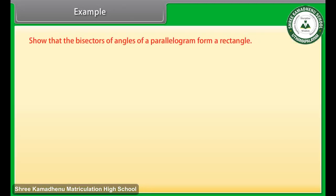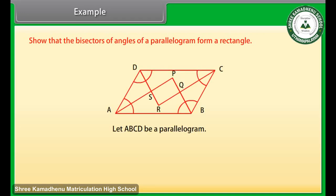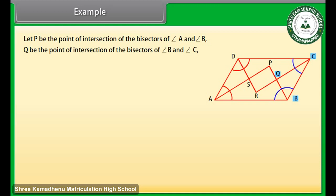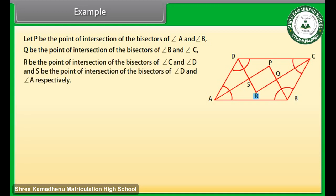Example. Let us now solve one problem: show that the bisectors of angles of a parallelogram form a rectangle. Let ABCD be a parallelogram. Let P be the point of intersection of the bisectors of angle A and angle B; Q be the point of intersection of the bisectors of angle B and angle C; R be the point of intersection of the bisectors of angle C and angle D; and S be the point of intersection of the bisectors of angle D and angle A.